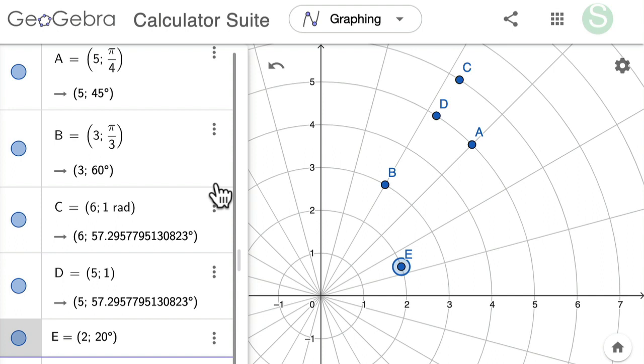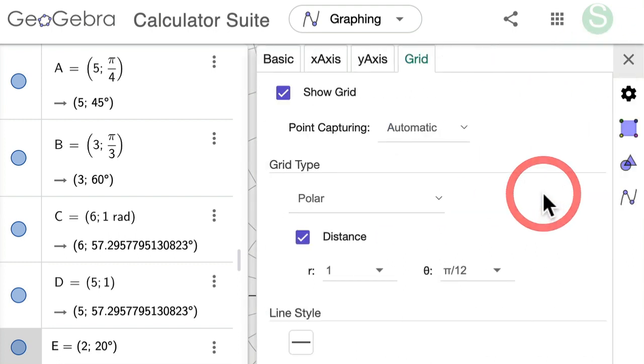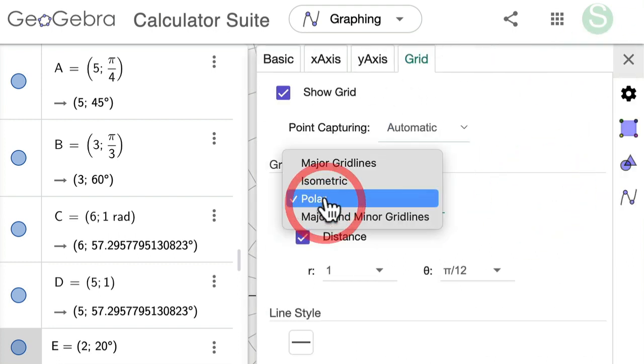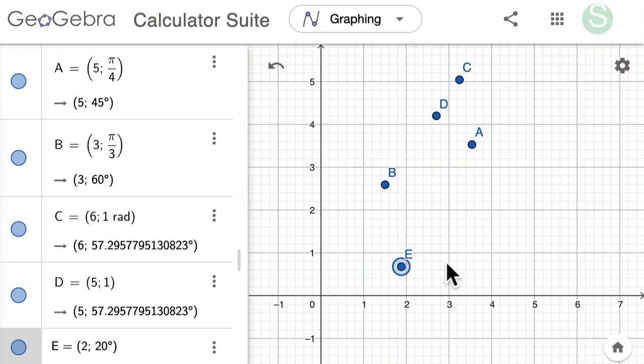And I think this is really useful. If you want to test out where the points are and how they function on the polar graph, you can do that quickly. You can even toggle right back over to your rectangular grid, your Cartesian plane right here.